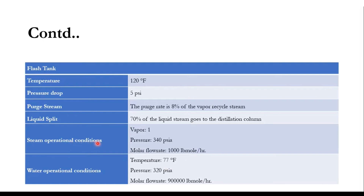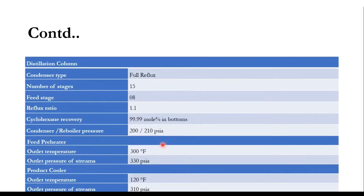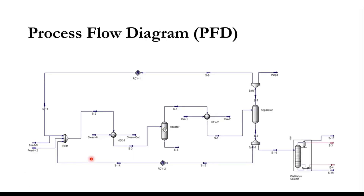The steam operating conditions for the preheater: vapor fraction is 1, pressure 340 psia, and molar flow rate 1000 lb-mol/hr. For the cooling water: inlet temperature 77°F, pressure 320 psia, molar flow rate 9×10^2.5 lb-mol/hr, and outlet pressure 330 psia for both streams. Now let's go to Aspen HYSYS and solve this flow sheet to obtain 99.99 mole percent cyclohexane recovery in the bottoms.